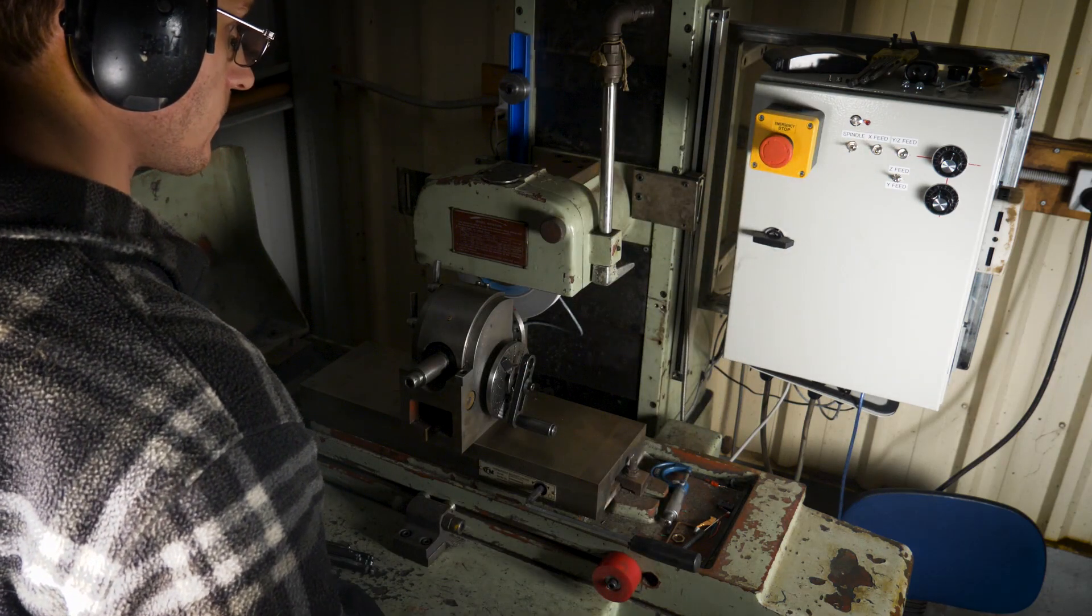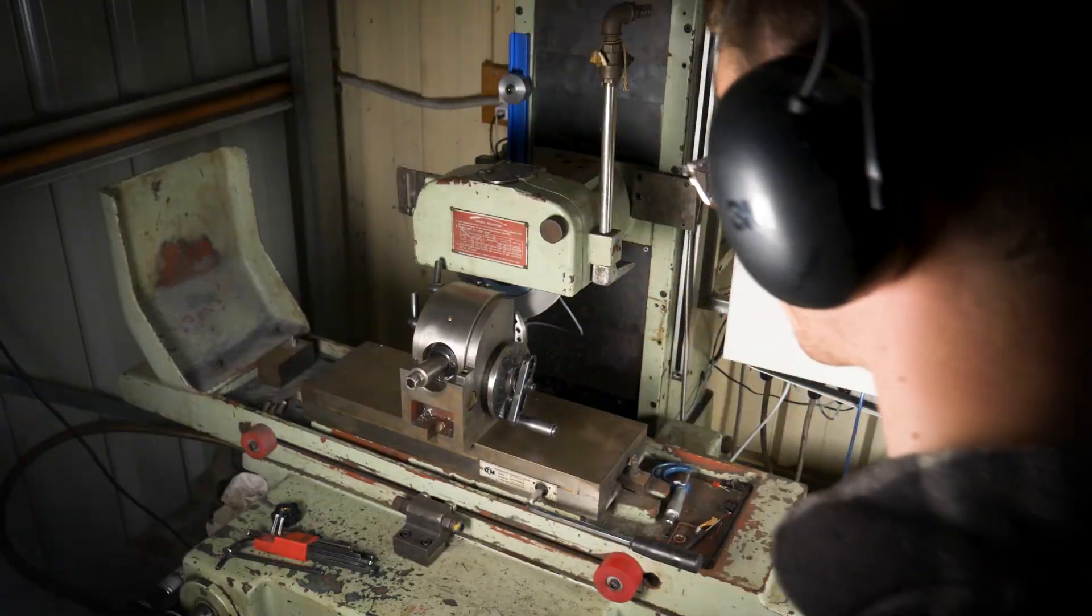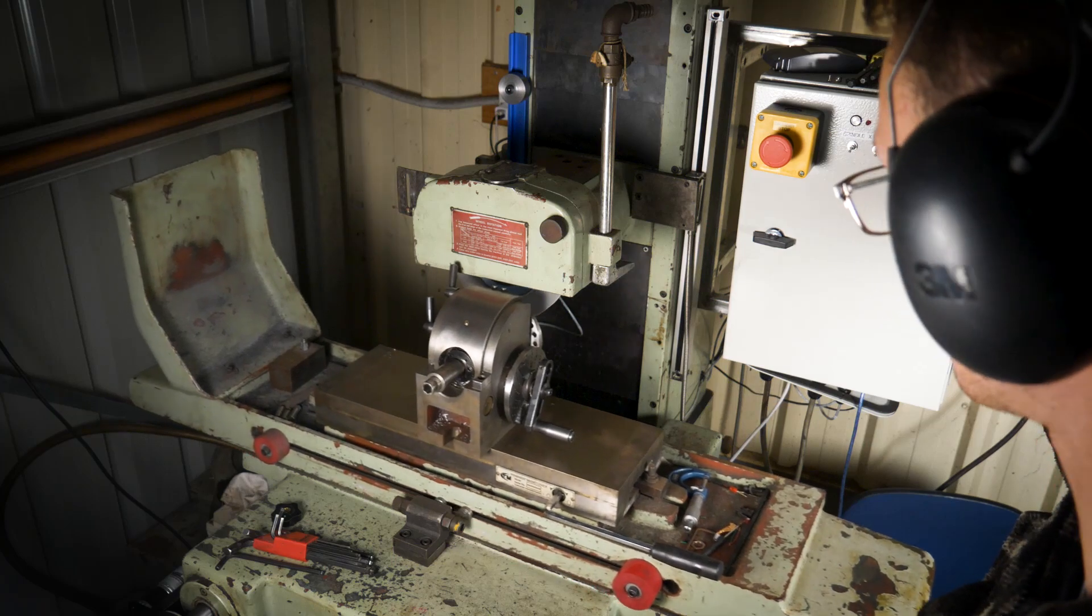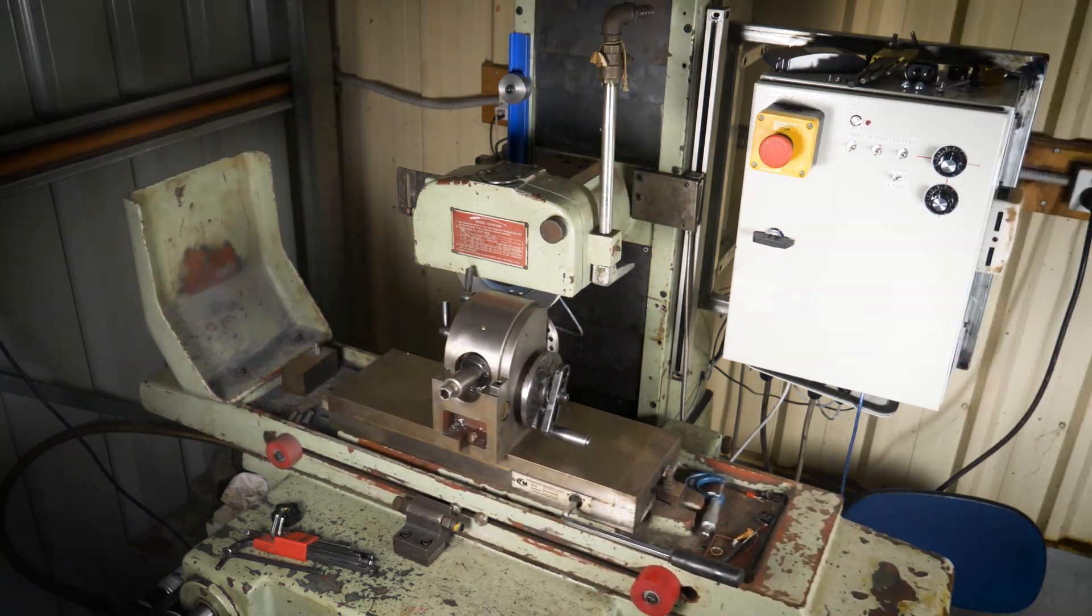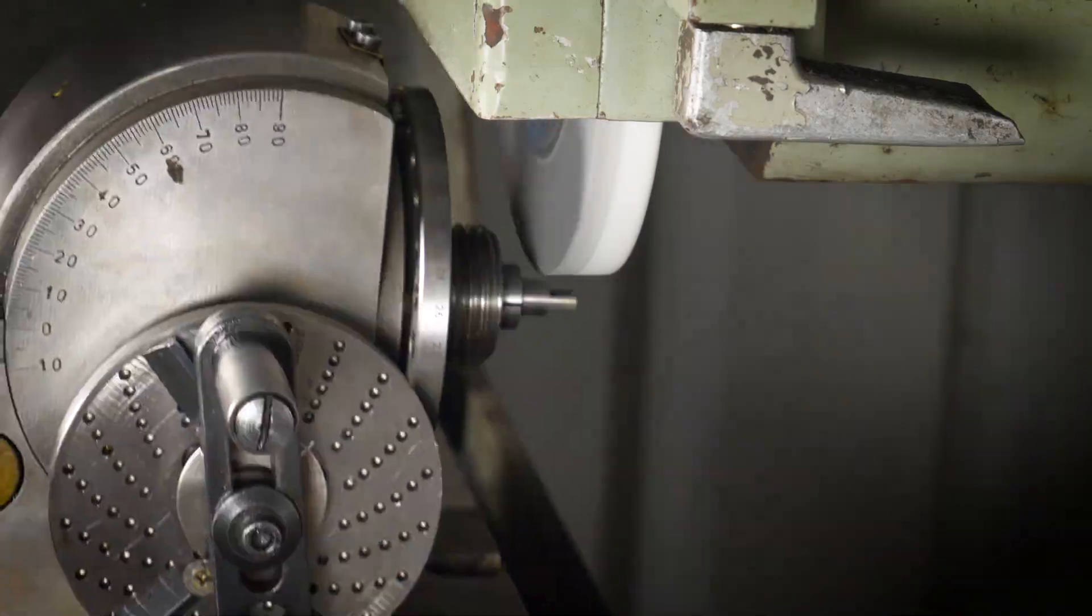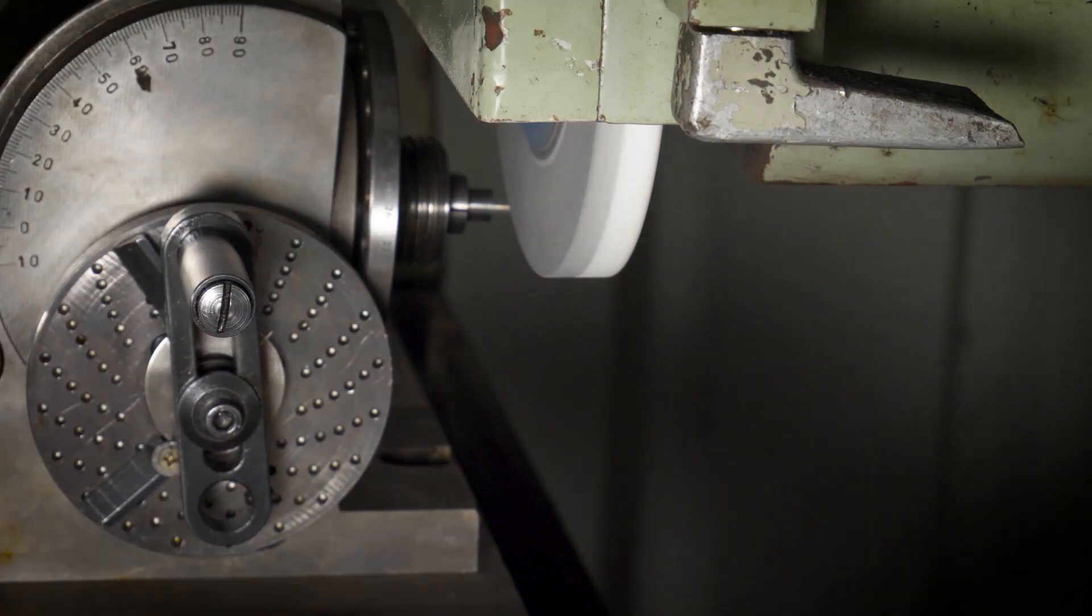So I can turn on the spindle, automate the X axis, and walk away while the Z axis feeds down. Everything comes to a stop when the Z axis limit switch is triggered.